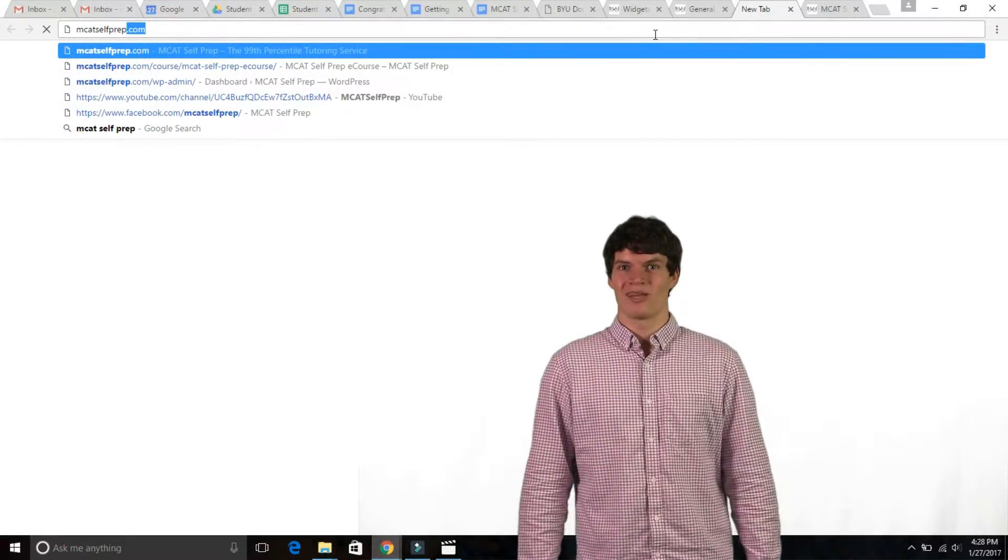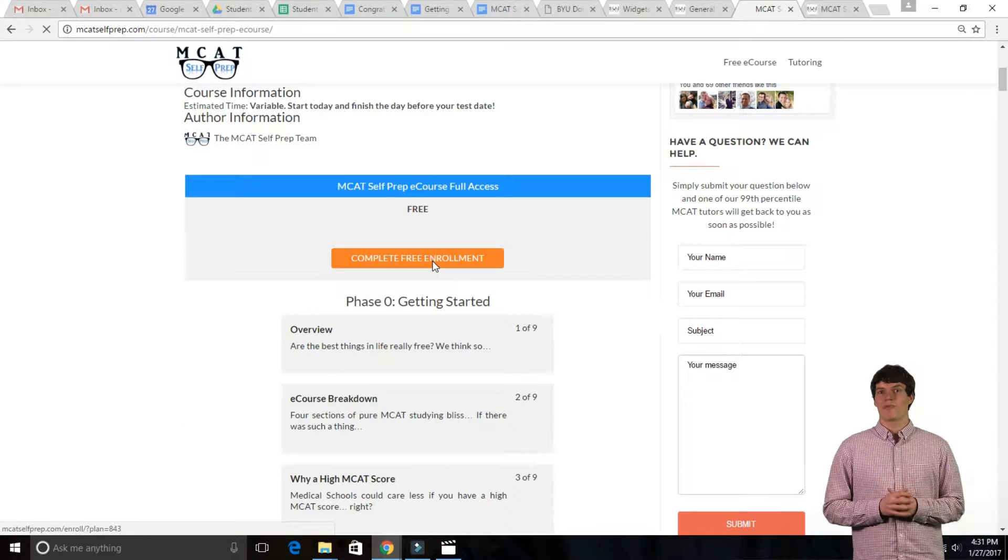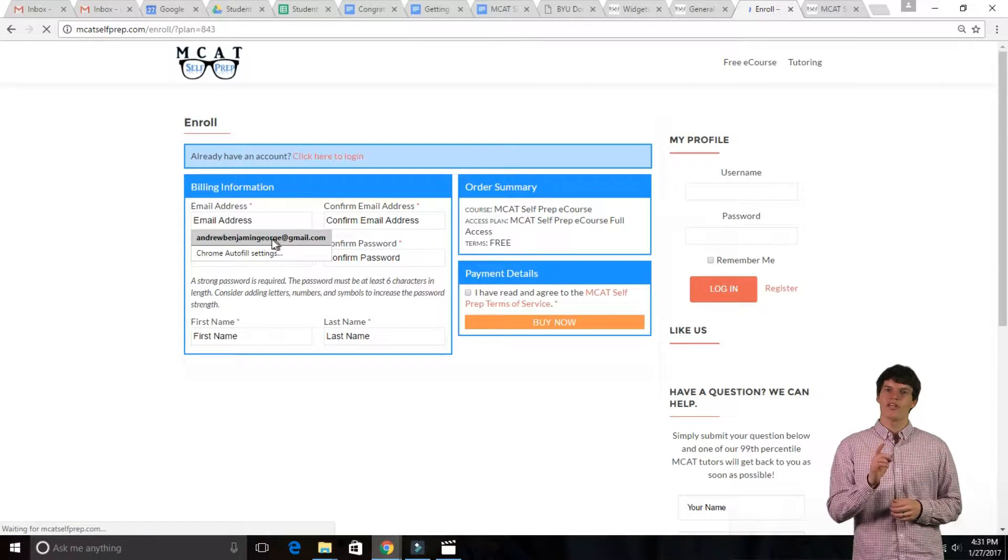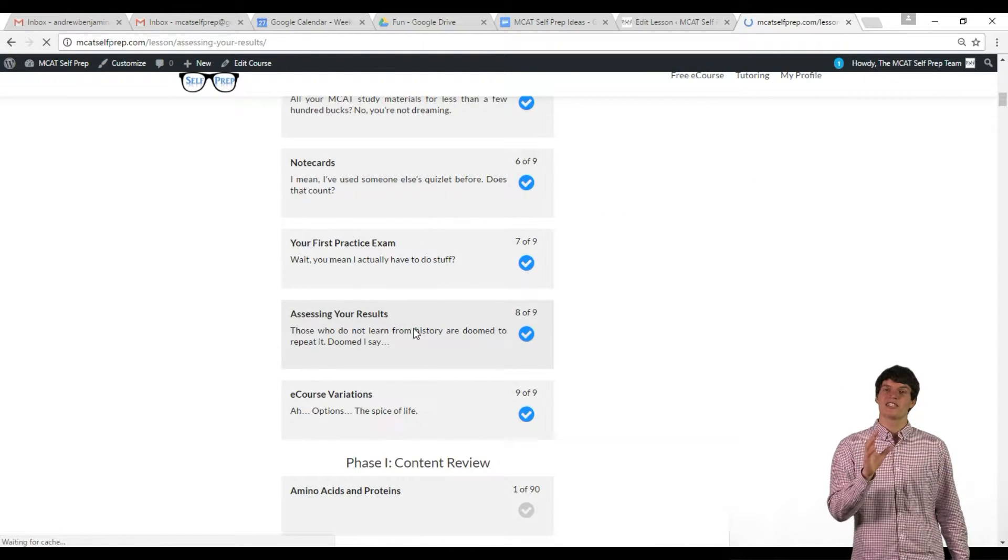Now, let's start with downloading your Study Portal. To download your Study Portal, go to MCATSelfPrep.com, complete your free registration for the e-course, then go to the lesson entitled Assessing Your Results.